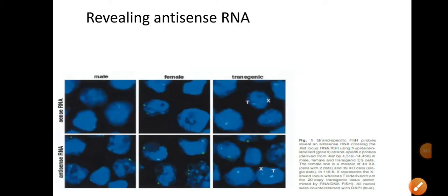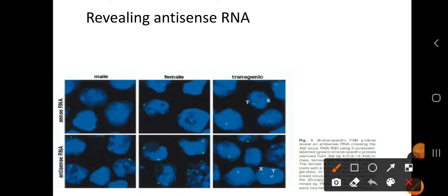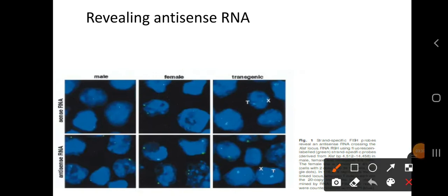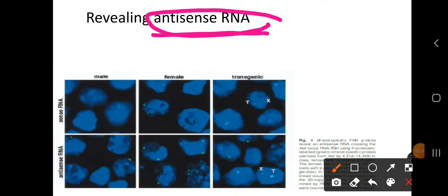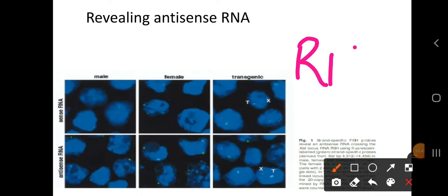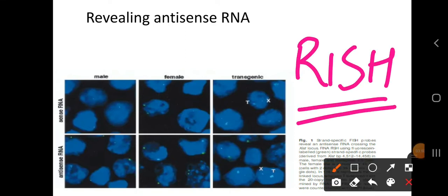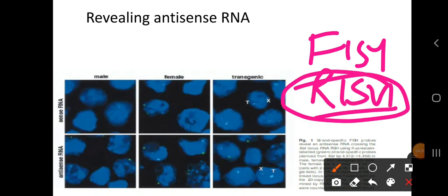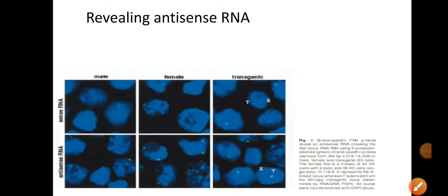As additional information — taken from a research paper — here is how we reveal antisense RNA in a laboratory. Whenever you want to detect antisense RNA or observe where RNA is interacting with DNA, you can use Fluorescence In Situ Hybridization, known as FISH, or another technique called RISH — RNA In Situ Hybridization. Both techniques can be used, and you can comment if you'd like a detailed explanation of the image.